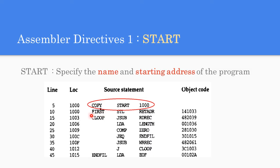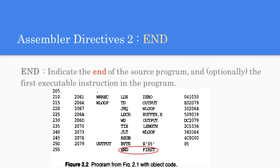The END assembler directive optionally contains a label pointing to the address of the first executable instruction in the program. If no label is mentioned with END, the assembler will automatically start executing the first statement written in the assembly code.